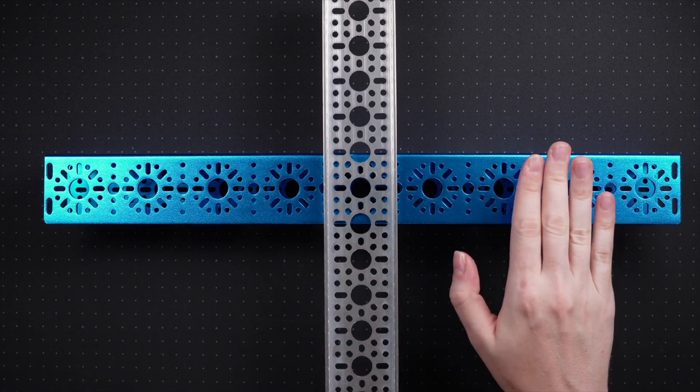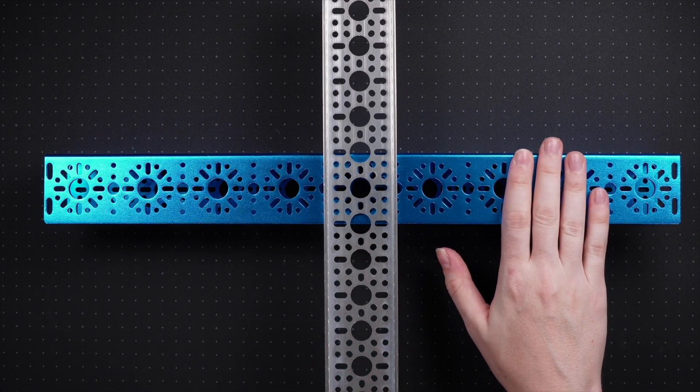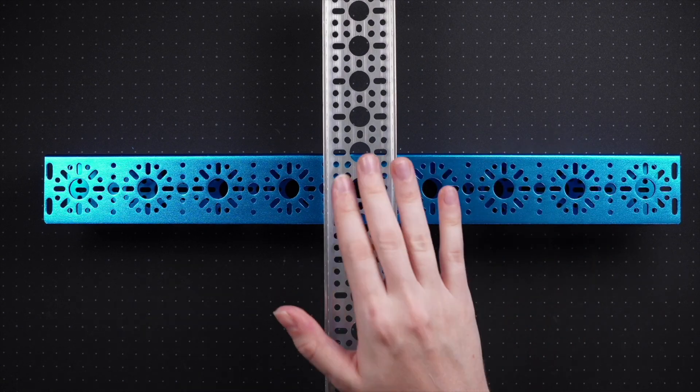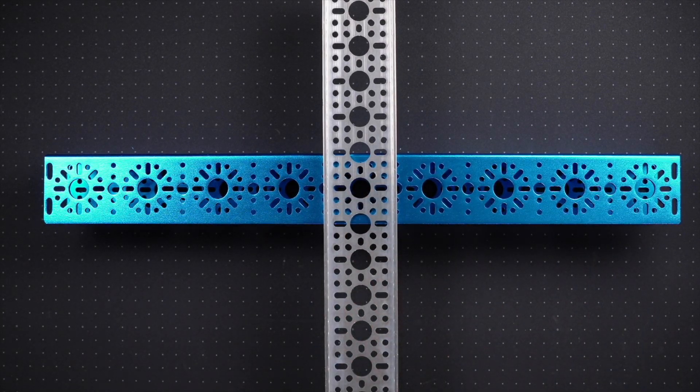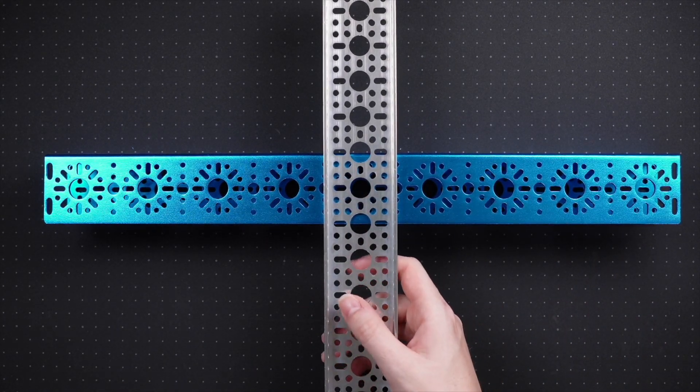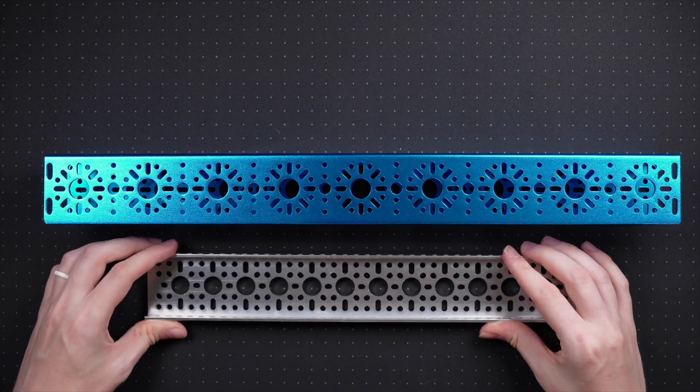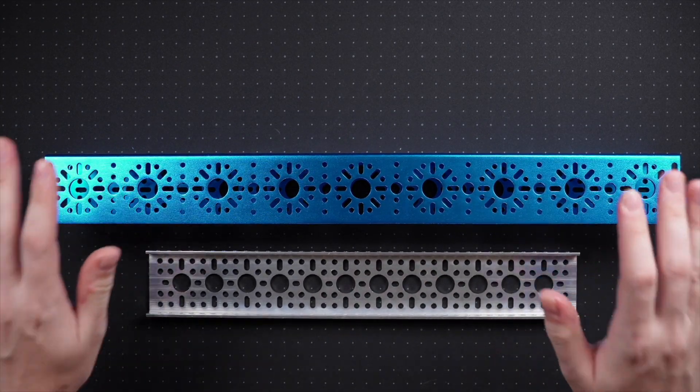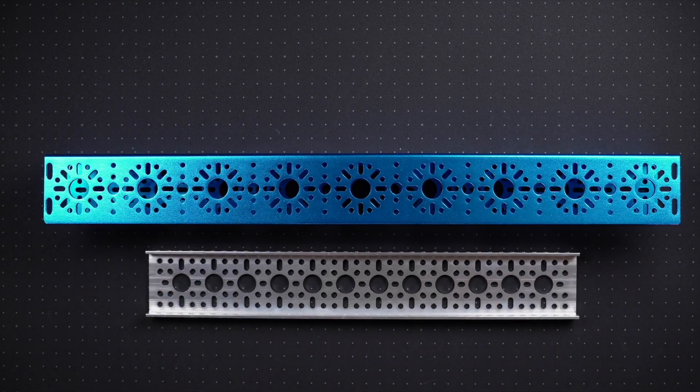You can buy some Studica Robotics structural material now and add it onto an existing Go Build chassis or vice versa in the future, which is awesome to see. I love to see compatibility between manufacturers, especially when you're a relatively new player in the game.